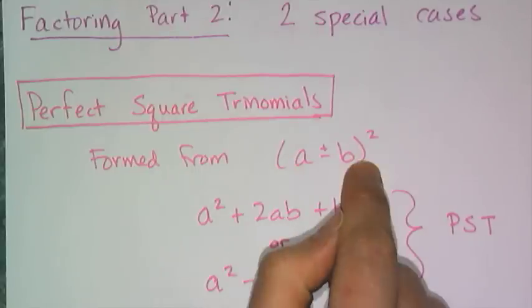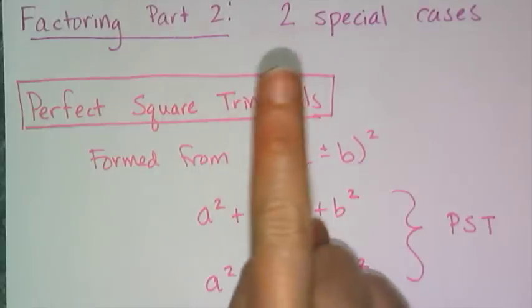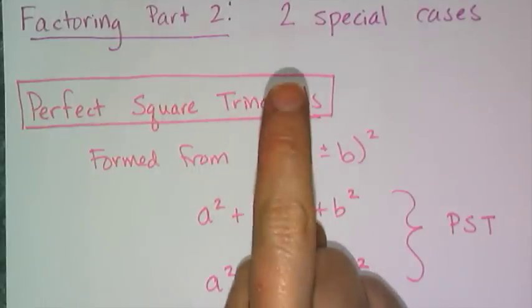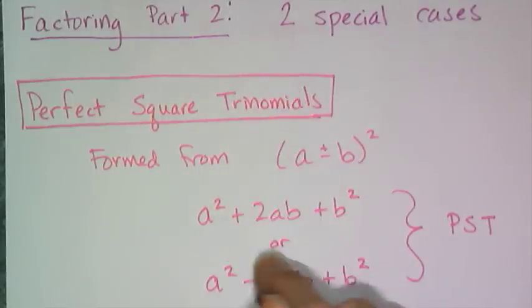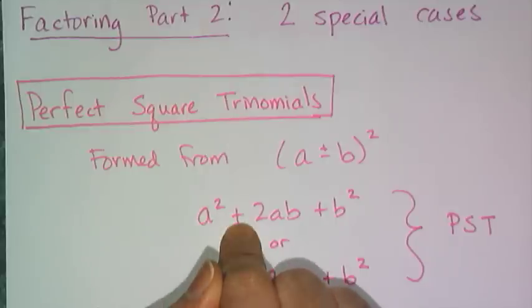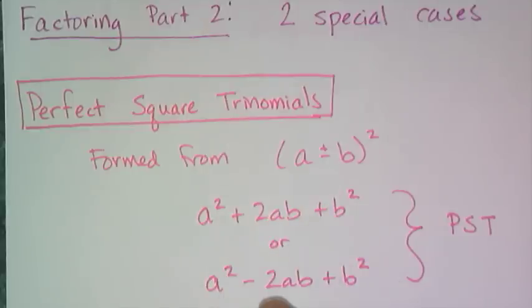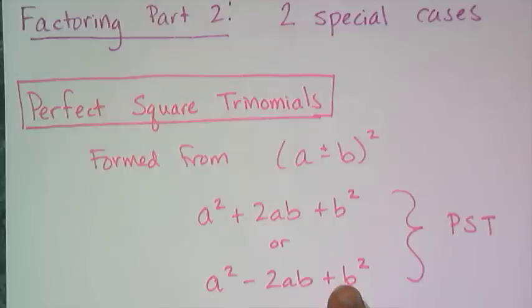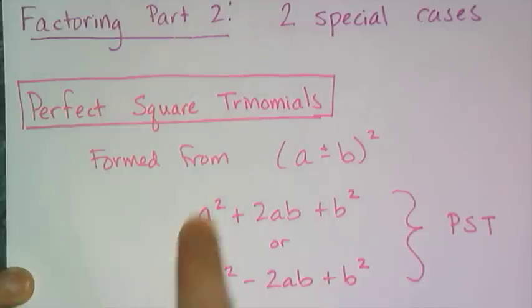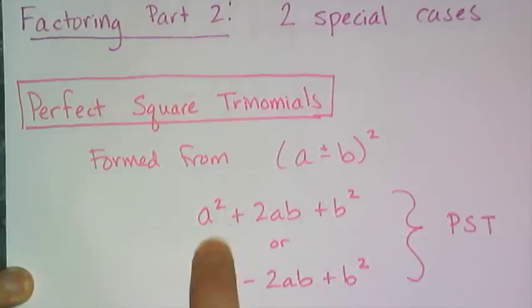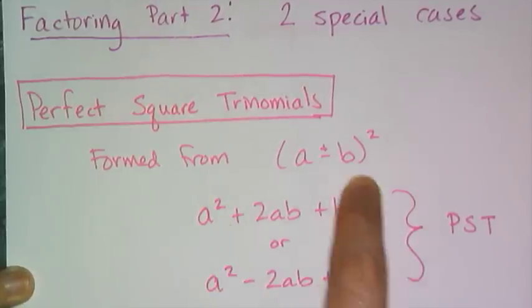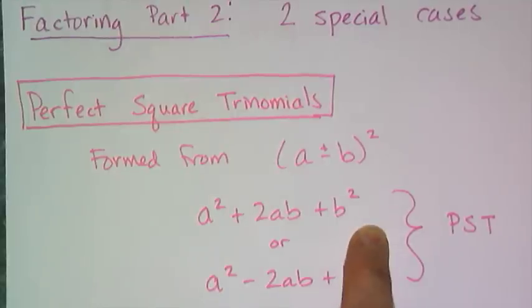Remember, it's not a squared plus b squared — that is not the way you multiply. It's a squared plus 2ab plus b squared, or a squared minus 2ab plus b squared. These two expressions are the perfect square trinomials.